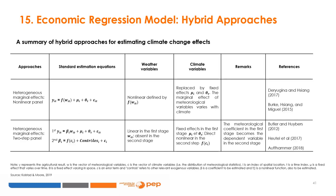In the two-step panel framework, the first step assumes: y_it = β_i·w_it + μ_i + θ_t + ε_it. In the second step, the meteorological coefficient β_i = f(c_i) + ctrl_i + ε_it, where climate variables are replaced by fixed effects μ_i and θ_t. Examples of this application can also be found in Derayugina and Sang (2017) and Burke et al. (2015).